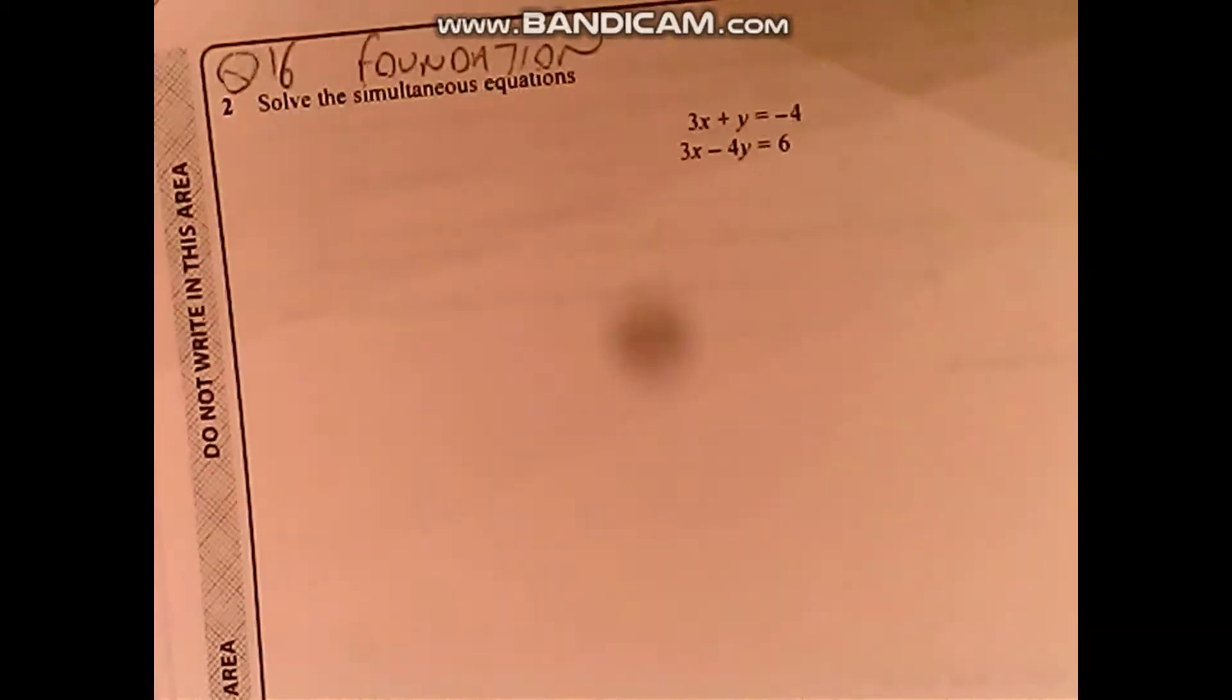Right, solve a simultaneous equation. 3x plus y equals negative 4, 3x minus 4y equals 6.